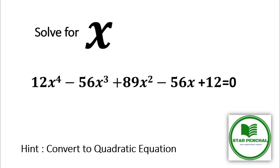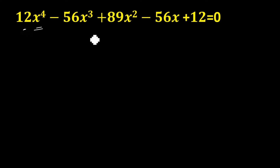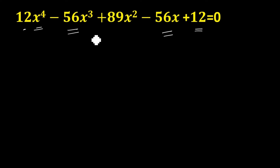Let's move to the solution. This is the given equation. The solution is possible only when you have two common factors — two common things. For example, the x⁴ coefficient is 12 and the constant is also 12. The x³ coefficient is minus 56 and the x coefficient is 56. When these two pairs are common, then only this kind of solution is possible.